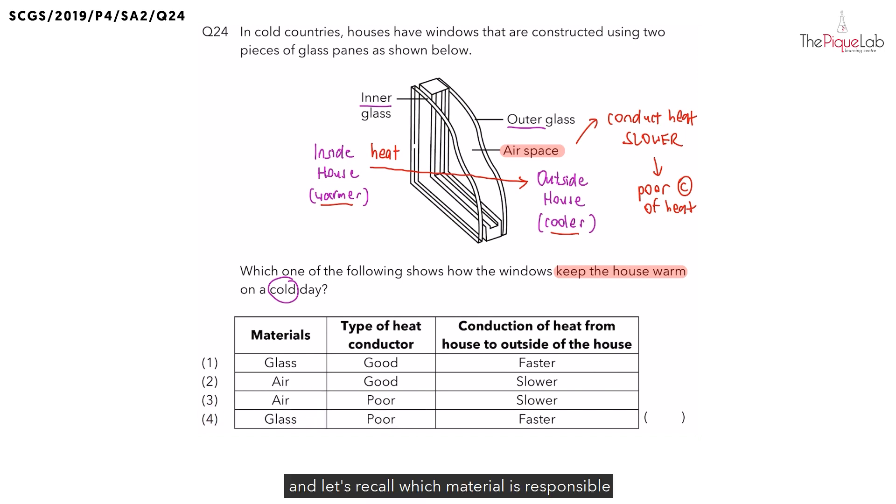Let's recall, which material is responsible for keeping the house warm? Is it glass or air? Yes, it is air. This is because air is a poor conductor of heat and would conduct heat slower. So the correct answer should be option three.